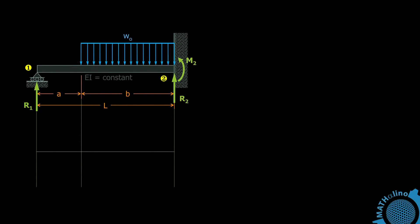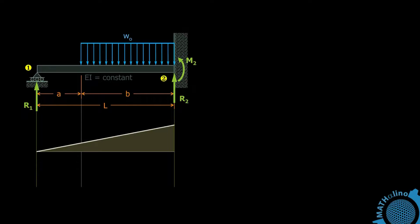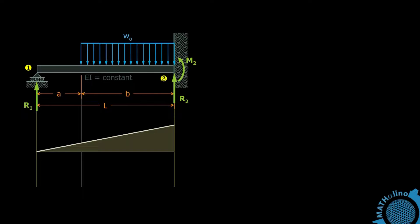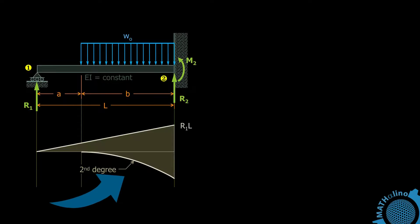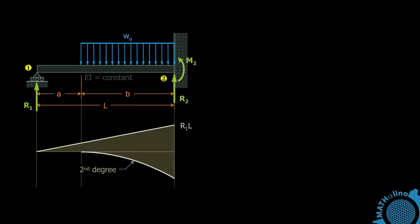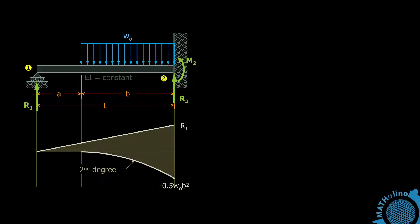Let us draw the moment diagram by parts. We are going to take support 2, the fixed end, as our moment center. The moment at 2 due to R1 is a first-degree curve with value R1 times L at point 2. The moment at 2 due to WO is a parabolic spandrel. WO causes the beam to bend downward about 2, which is why the moment area is on the negative side. The area equals WO times B times B over 2, which is 0.5 WOB squared.